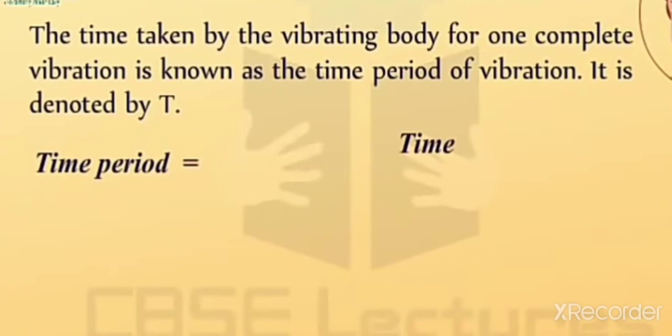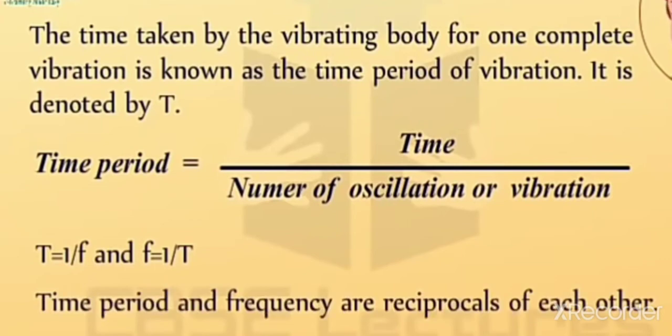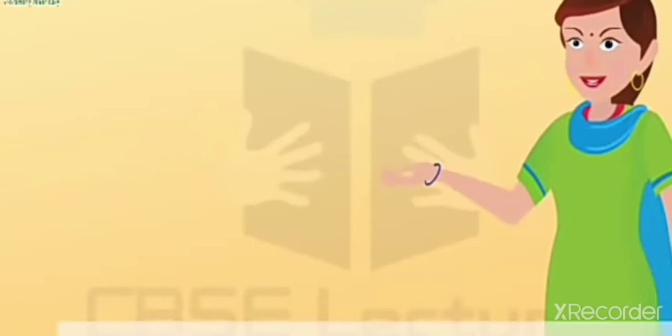Time period equals time divided by number of oscillations or vibrations. T equals 1 divided by F. F equals 1 divided by T. Time period is the inverse of frequency.